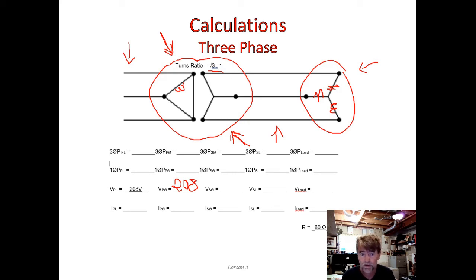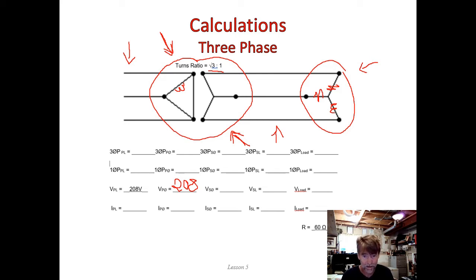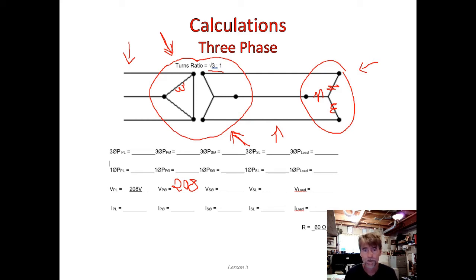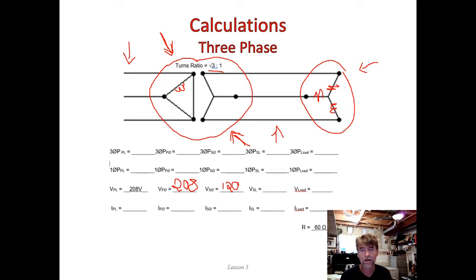Now let's go through the transformer. The turns ratio is root 3 to 1, so the voltage goes down by root 3. The 208-volt primary phase voltage goes down to 120 volts on the secondary phase. I want to highlight that — that 208 going down to 120 is entirely a result of the turns ratio of the transformer, not the three-phase system math.